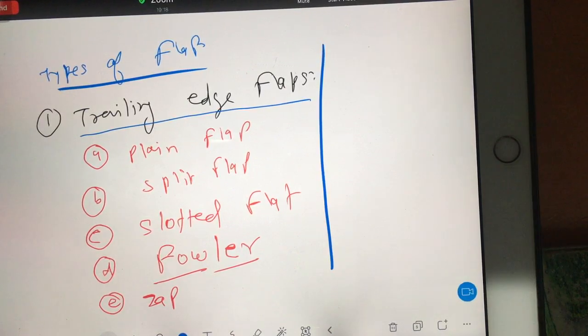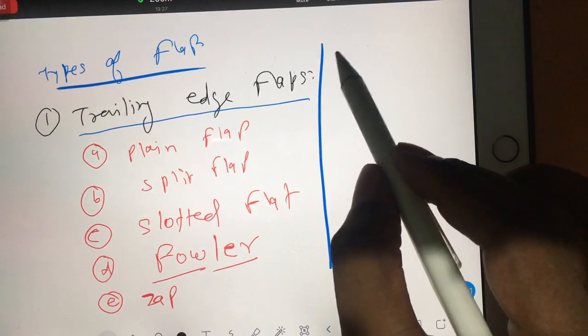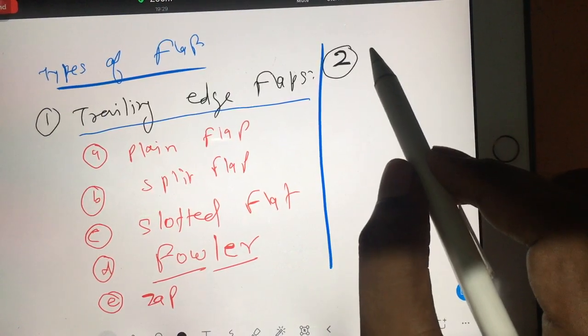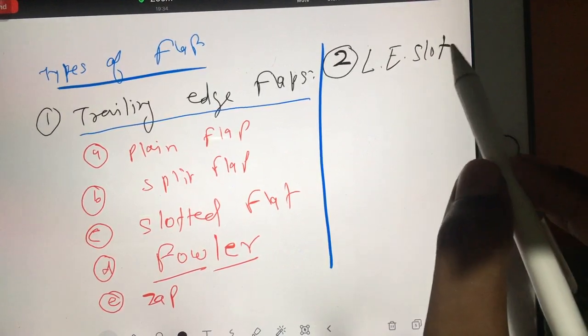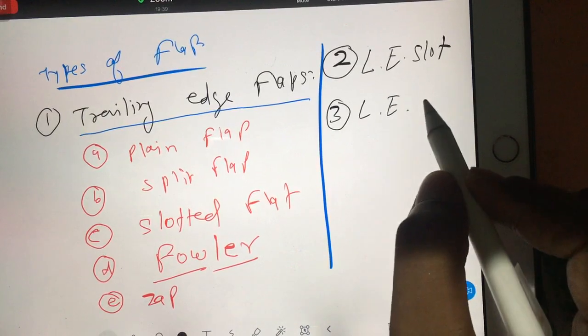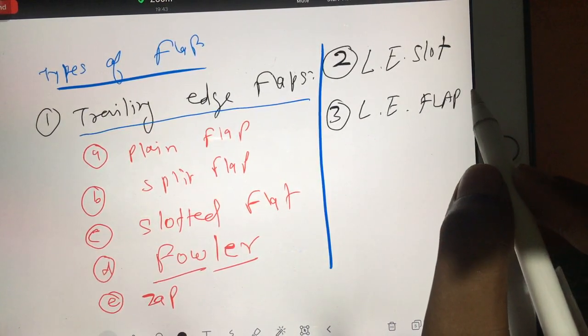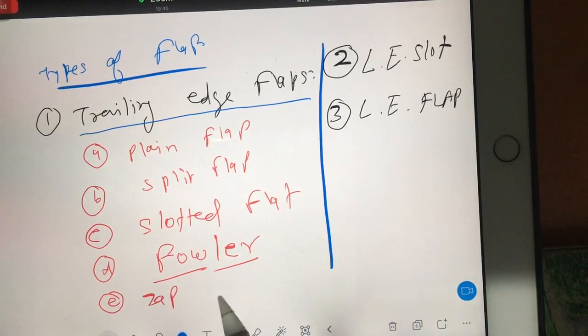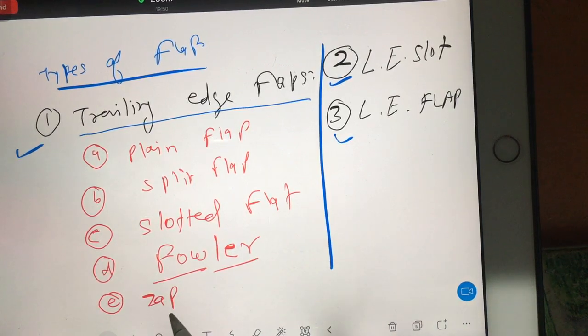After trailing edge flap, you have leading edge flaps. So in leading edge, you have flap. In that, your second category is leading edge slot. Then you have third category: leading edge flap. So these are the important categories under flap. One by one we have to understand them.